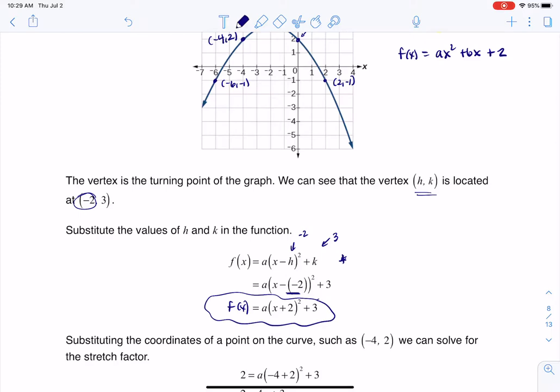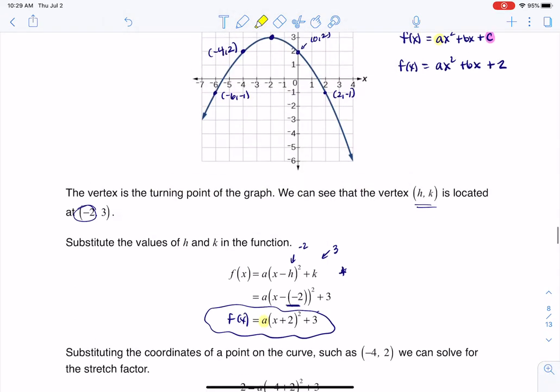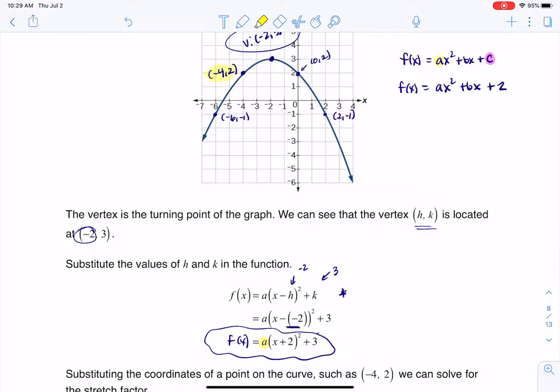And again, if you want to find this A value, and actually I think I used the yellow highlighter before, if I want to find that A value, I just need to use any of these other ordered pairs that I have, and it doesn't matter which one.